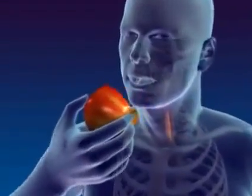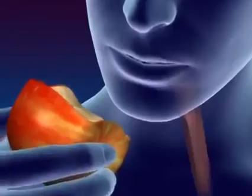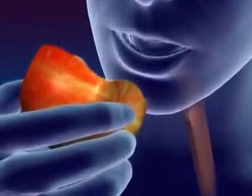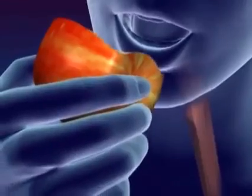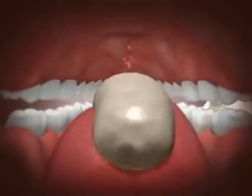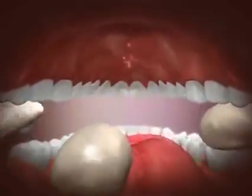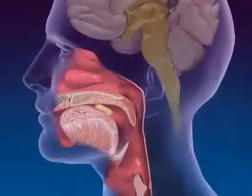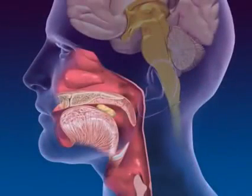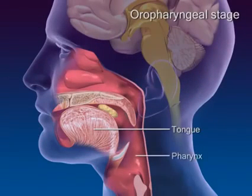Swallowing occurs in two stages: the oropharyngeal and oesophageal stages. At the start of a swallow, a food bolus is voluntarily pressed by the tongue up against the roof of the mouth and backwards towards the pharynx.